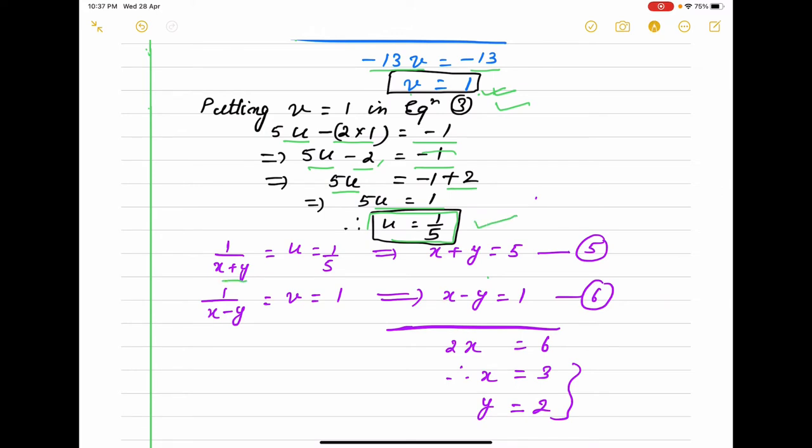Now I am putting the value. 1/(x+y) is u, that is 1/5. So x+y will be 5. 1/(x-y) is v=1, that is 1/1. If you take reciprocal, it is 1. Now you simplify. y will be cancelled and 2x = 6, x = 3. Put the value of x in any equation. Putting x=3 in equation 5, you will get y=2. This will be your required answer.